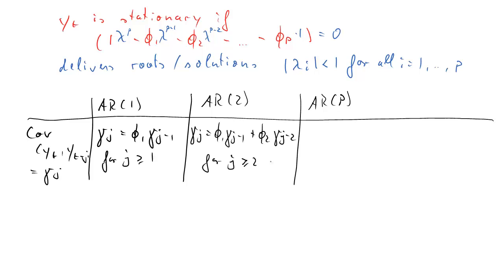For all j larger and equal than 1. For the AR(2), that's going to look very similar. For all j larger than 2. And therefore, for the AR(p), we get a very similar result. And gamma_j is a function of gamma_{j-1} all the way up to gamma_{j-p}, and linearly related using the AR coefficients phi_1 to phi_p.